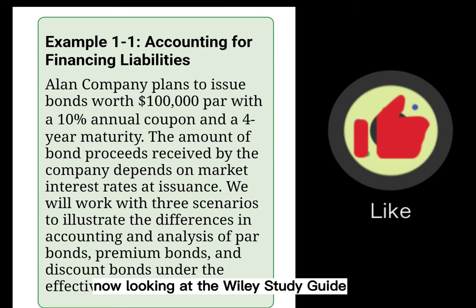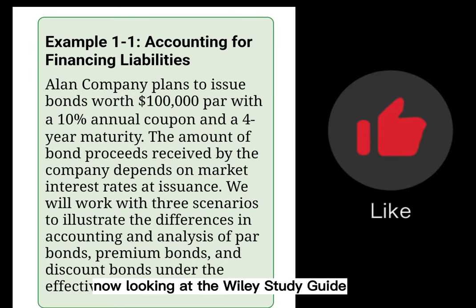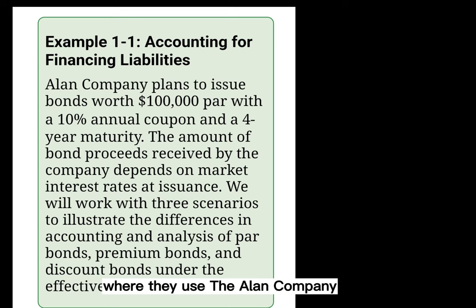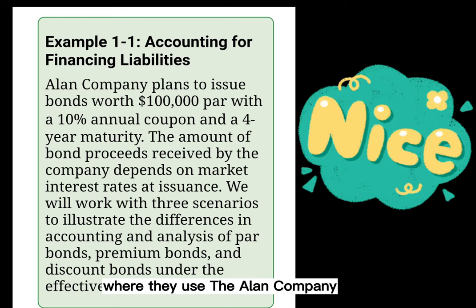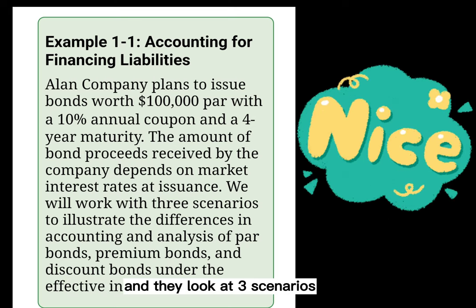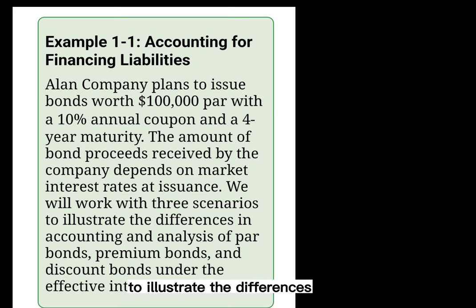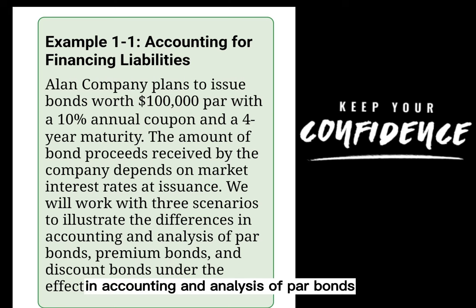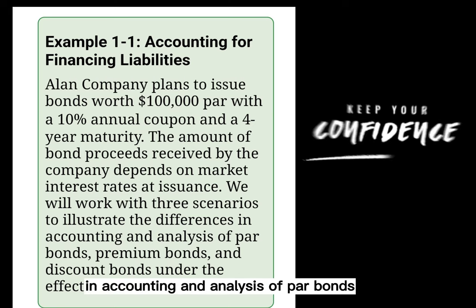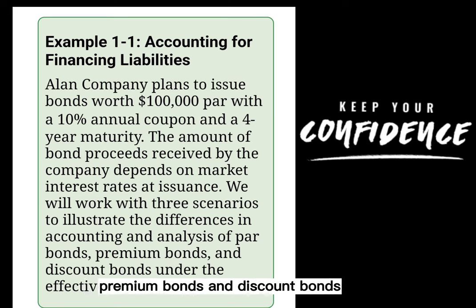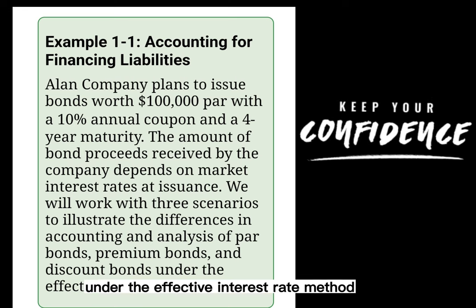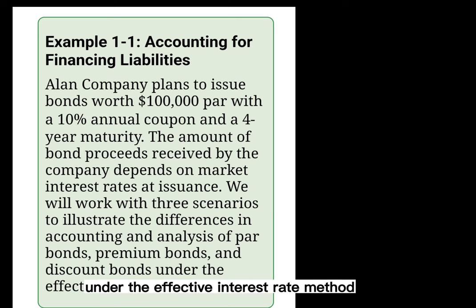Now looking at the Wiley study guide, you can see there's a nice example where they use the Allen Company, and they look at three scenarios to illustrate the differences in accounting and analysis of par bonds, premium bonds, and discount bonds under the effective interest rate method.